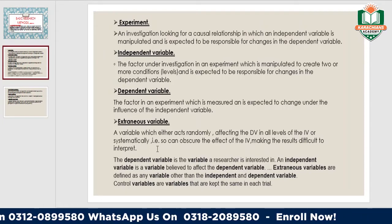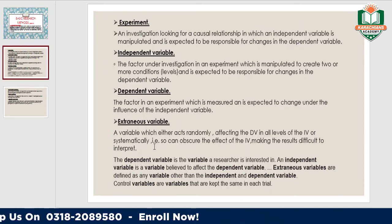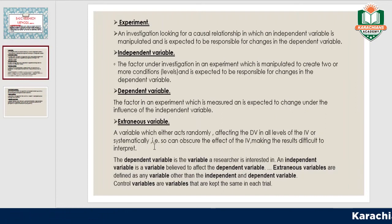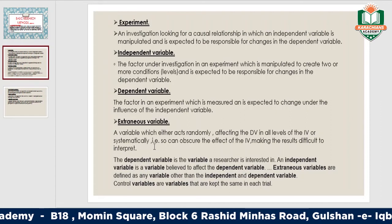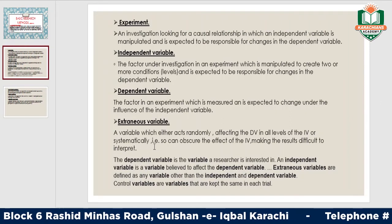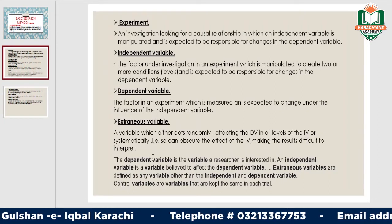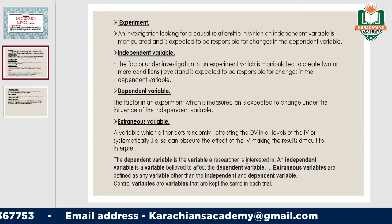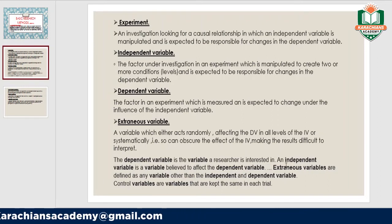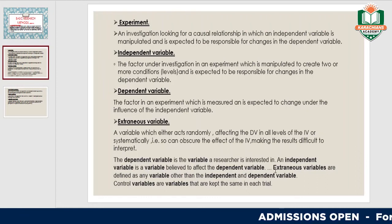An extraneous variable is a variable which either acts randomly, affecting the dependent variable across all levels of the independent variable, or systematically, obscuring the effect of the independent variable and making results difficult to interpret. For example, if someone enters the room or lights change while we are memorizing words, that is an extraneous variable.